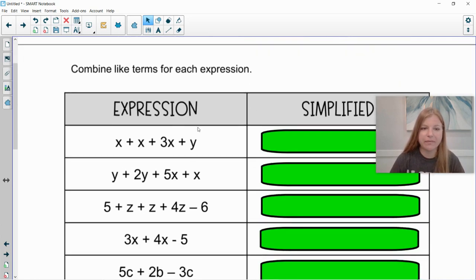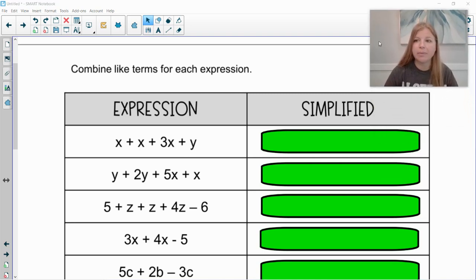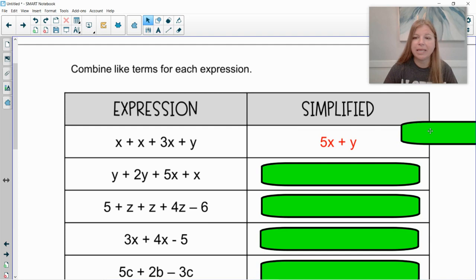Okay, so let's take a look. The first problem that we have here is x plus x plus 3x plus y. So I see I have three like terms, x plus x plus 3x. There's really ones in front of these first two x's, so I have to think about it as 1x plus 1x is 2x plus another 3x would be 5x. Would 5x combine with a y? Absolutely not. So I would leave the y and my answer is just simply 5x plus y.